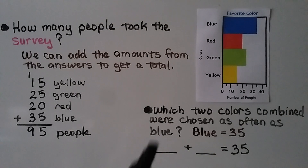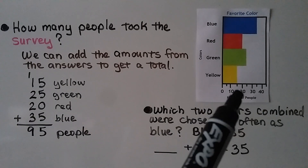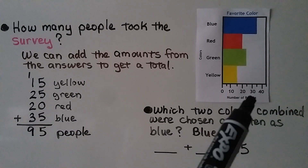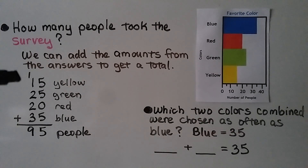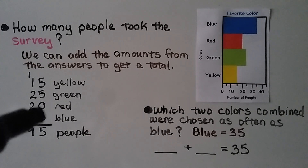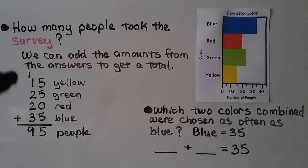How many people took the survey? We can add the amounts from all the answers to get a total. Yellow is 15, green is 25, red is 20, and blue is 35. We add all the numbers: 15 + 25 + 20 + 35. Starting in the ones place: 5 + 5 is 10, plus 5 more is 15. We regroup the ten to the tens place and write five ones down. Then adding the tens column: 1 + 1 + 2 + 2 + 3 = 9, so ninety-five people answered.